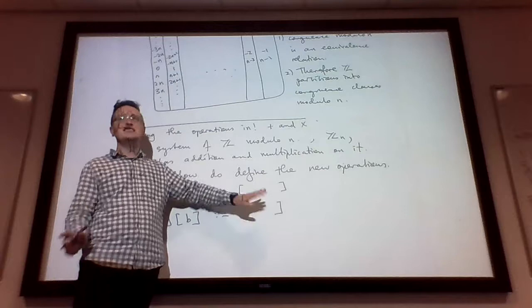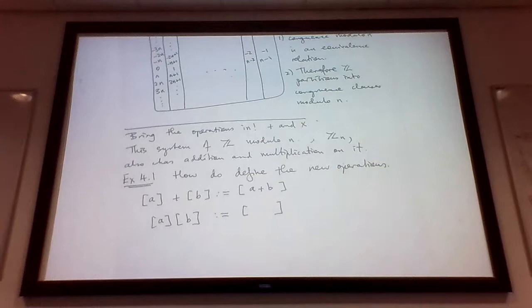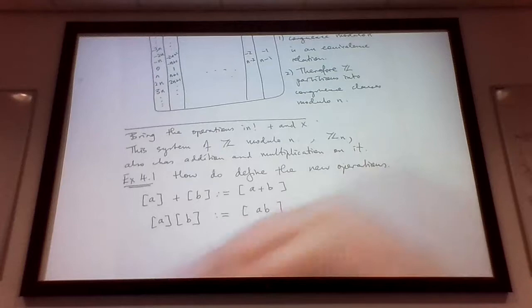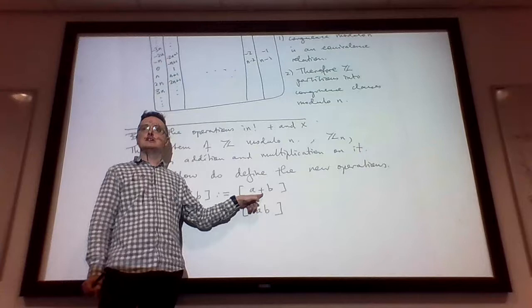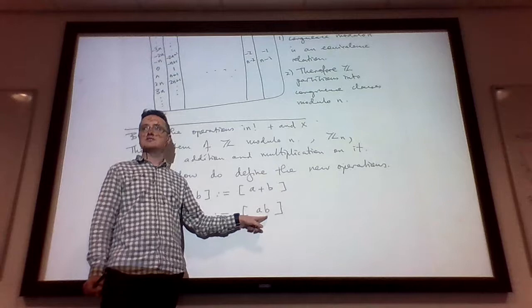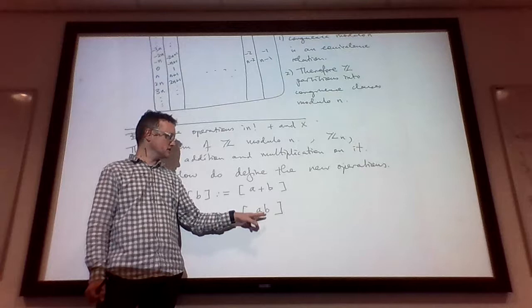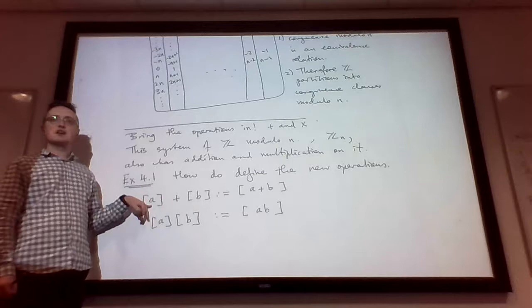There's really one and only one possible obvious definition. We're going to define the sum of two congruence classes as the congruence class of the sum: [a] + [b] := [a + b], where the addition inside is plain old primary school addition of integers. And similarly the product: [a] · [b] := [a · b], using ordinary multiplication. These familiar operations create these new operations amongst congruence classes.